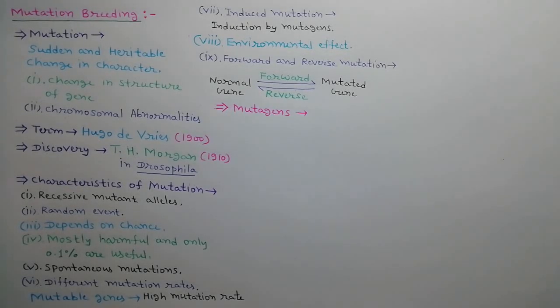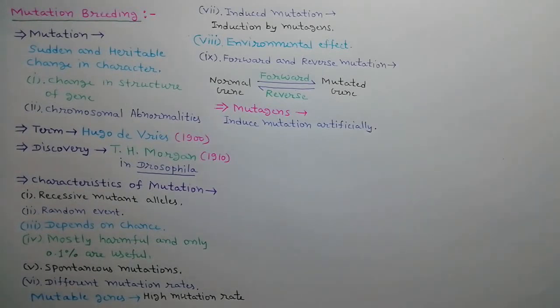What are mutagens? Mutagens are physical or chemical agents which can induce mutation artificially. They are of two types: physical mutagens and chemical mutagens.